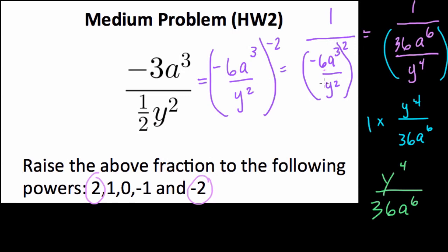You don't need to go through all these steps. Remember, a negative exponent flips the entire fraction. So here, y squared moved from the denominator to the numerator, and negative six a to the third moved from the numerator to the denominator, and everything is squared. If you have something to the negative two power, just think: flip it around and square every piece.